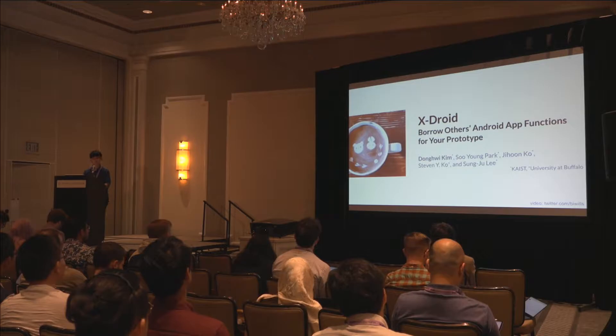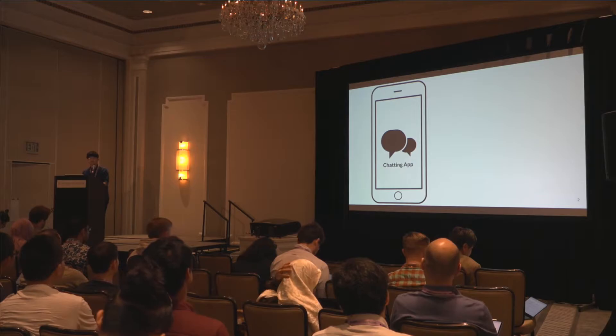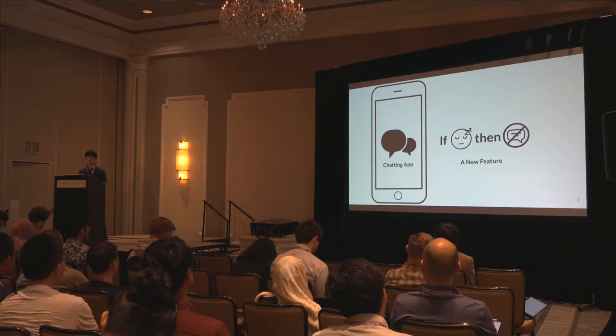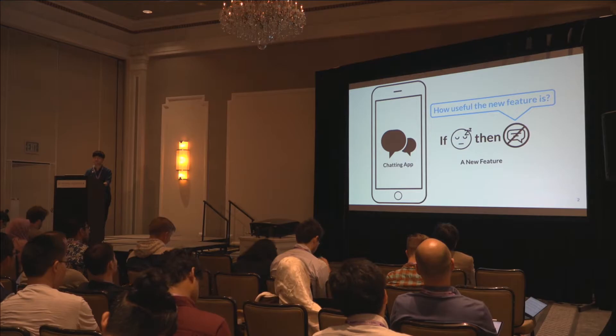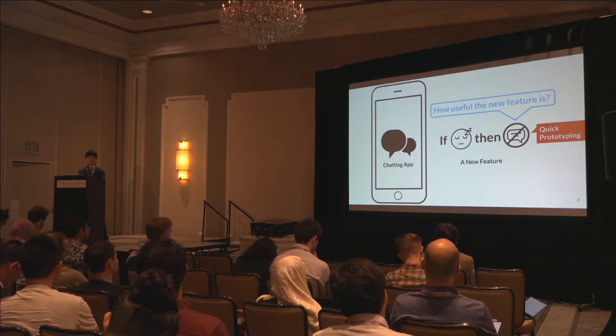Let me start with an example. Suppose you are a chatting app developer, and one day you come up with an interesting idea for a new feature which automatically snoozes chat notifications while your users are asleep. This sounds interesting, but if you think about how useful it will be, you might have several questions — for example, how useful it will be compared to the existing manual snooze feature, and how annoying false detection of sleep status would be. To answer those questions, you might want to quickly prototype this feature and try it out yourself for several days, so you can decide whether to fully develop it or not.